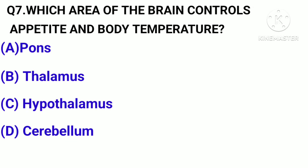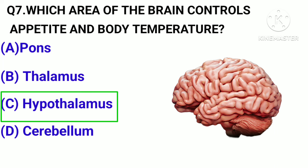Question number 7. Which area of the brain controls appetite and body temperature? A, Pons. B, Thalamus. C, Hypothalamus. D, Cerebellum. Correct answer: Option C, Hypothalamus.